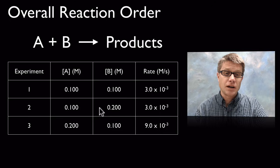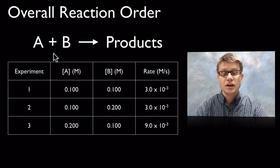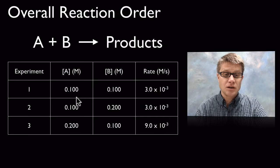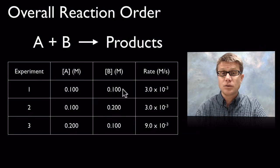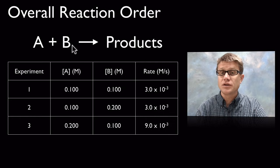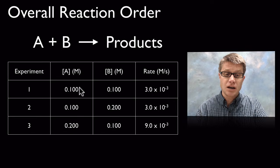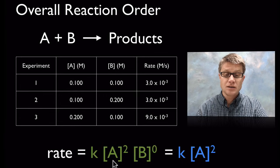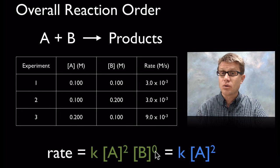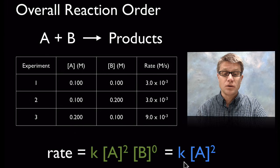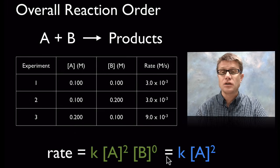Now let's look at overall reaction order when there's more than one reactant — this is a very common AP Chemistry question. From the data table, we hold the concentration of A steady and vary B: the rate doesn't change, so B is zeroth order. Then we hold B steady and vary A: doubling [A] from experiment 1 to experiment 3 causes the rate to square, so A is second order. The overall reaction order is 2 + 0 = 2.